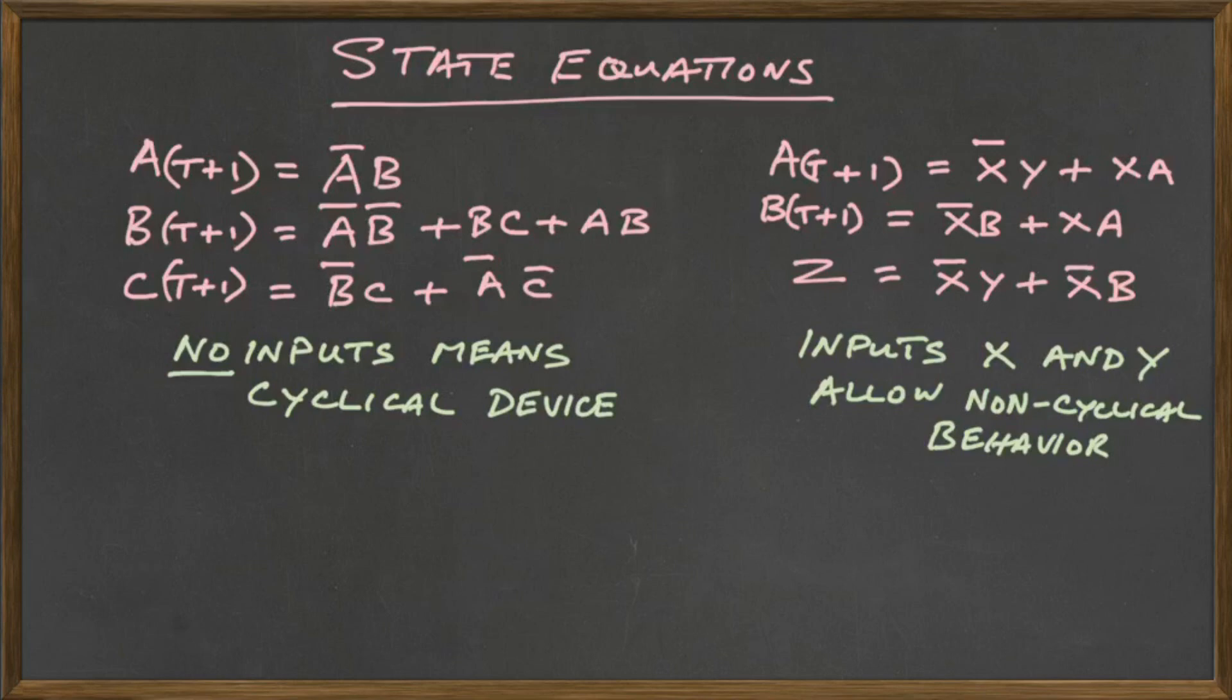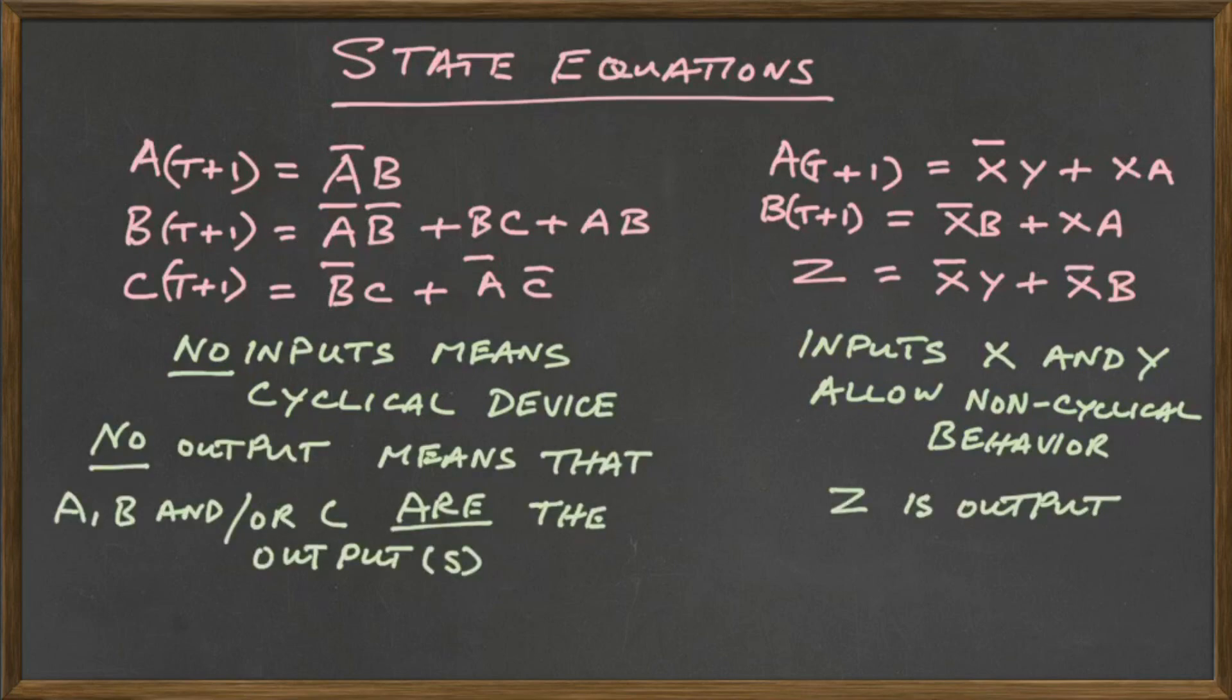But the presence of the inputs allows us to have a device which has non-cyclical behavior. The finite state machine on the right hand side also has an output equation Z. The finite state machine on the left side has no outputs specified meaning then that the A, B and C are the outputs of that device. But the one on the right, the A and B could as well be considered to be output up to the discretion of the designer.